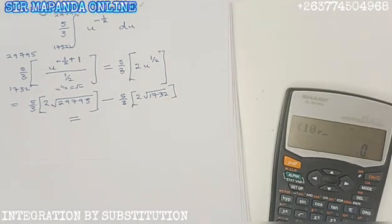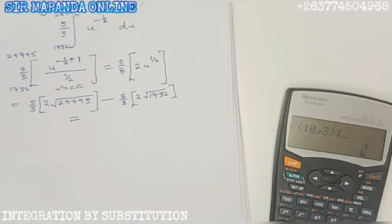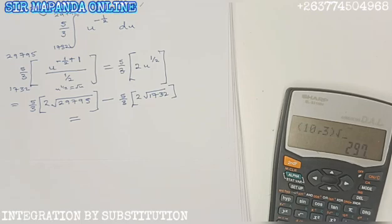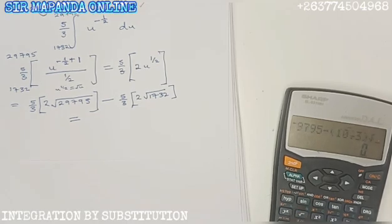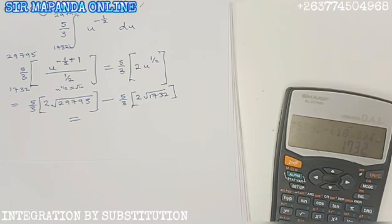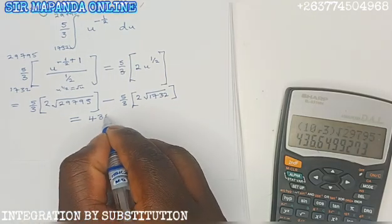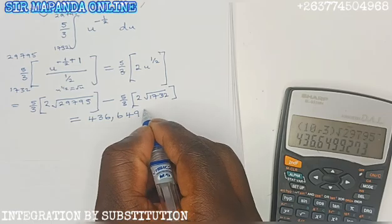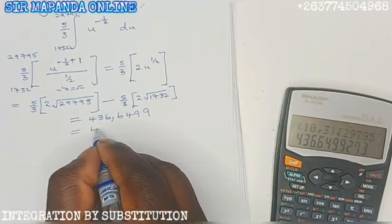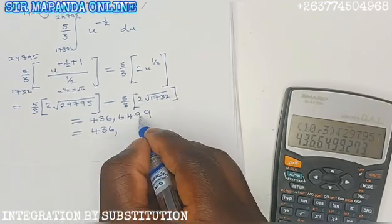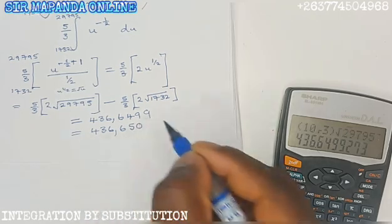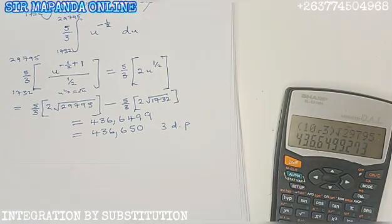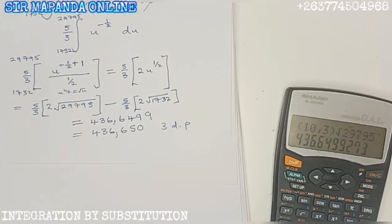10 divided by 3 square root 29,795 minus 10 divided by 3 square root of 1732. You get 436 comma 649.9. To 3 decimal places, you get 436.650 to 3 decimal places required. Then you get yourself 8 marks. Then you are home and dry. I hope you are following class. Thank you.